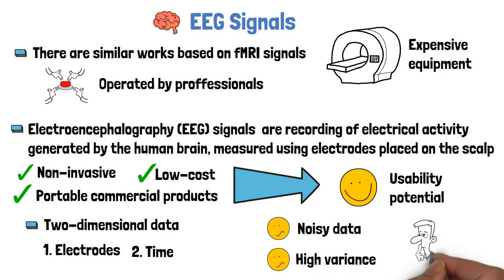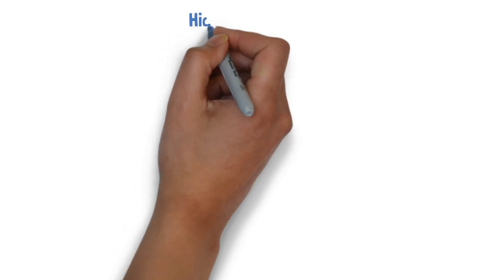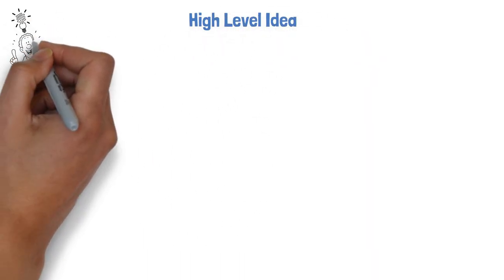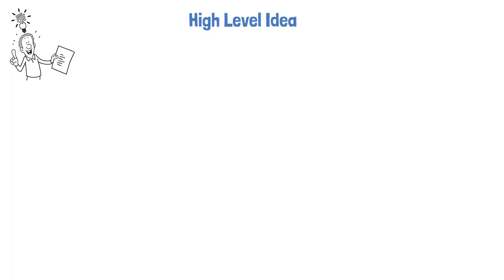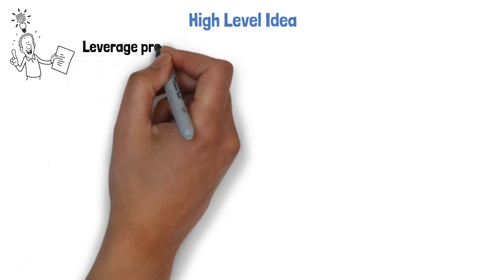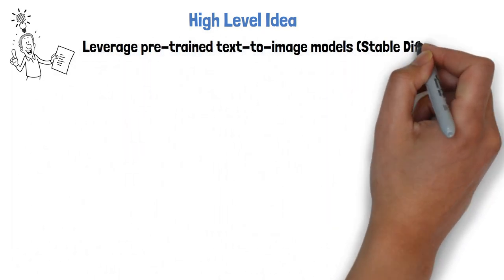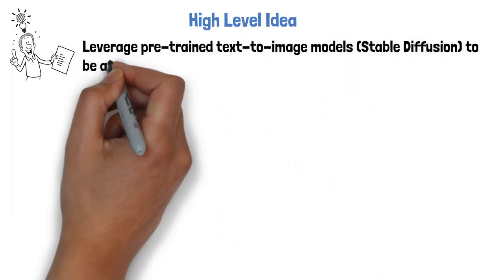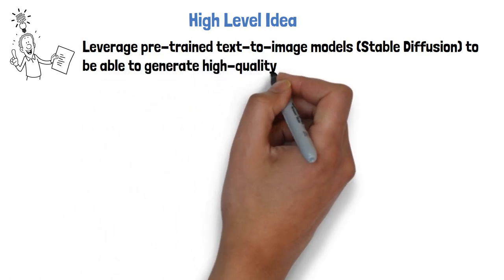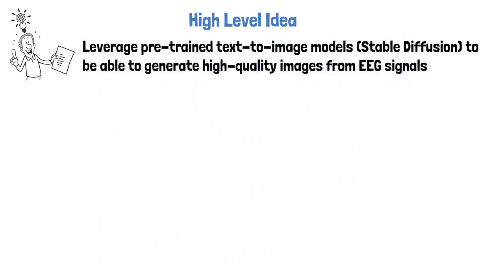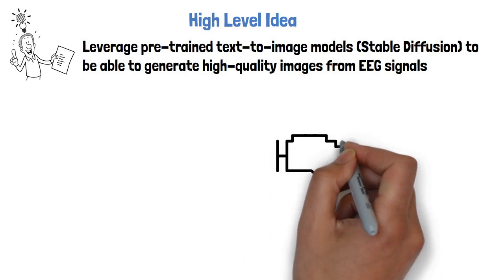We'll see in a minute how the researchers handle these challenges. The researchers' idea was to leverage the powerful generative capabilities of pre-trained text-to-image models. Specifically, they use Stable Diffusion to generate high-quality images directly from brain EEG signals.